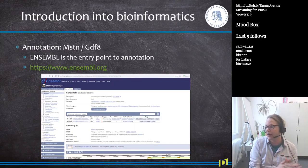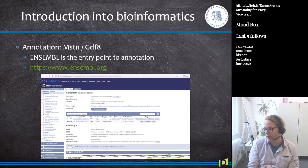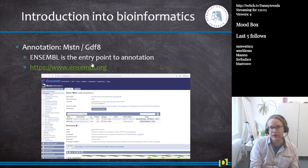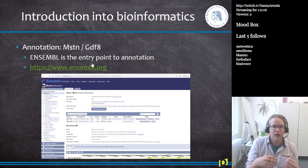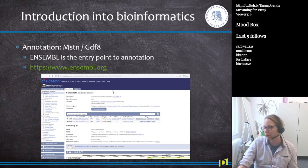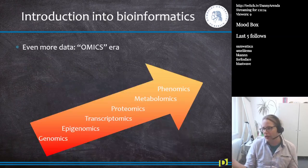Besides GenBank, Ensembl is the entry point to genomic annotation data. If you want to learn about a gene in a specific species — how many exons it has, which tissues it's expressed in, what proteins it encodes, what variations are known — go to Ensembl. We will revisit Ensembl multiple times during the lecture series.